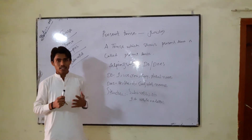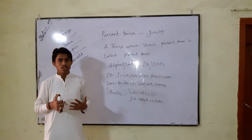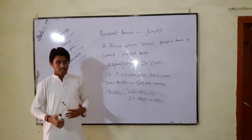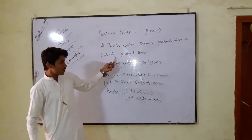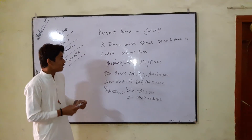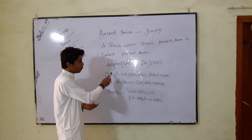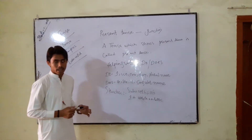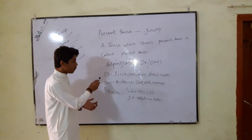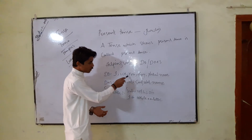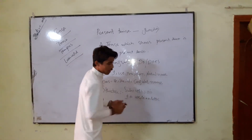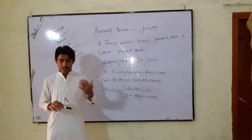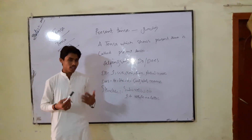Tense means time. By typing the verb form, we use 'do' — do is used with I, we, you, they, and plural nouns. Plural noun means a noun referring to more than one, for example, a plural name.